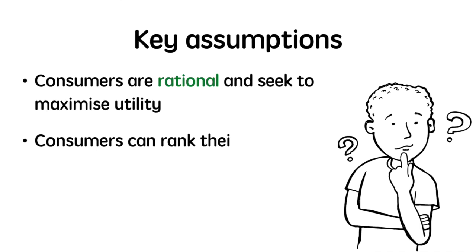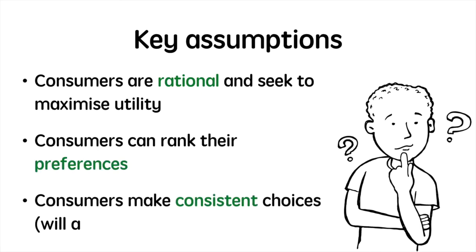They can rank their preferences. They can also make consistent choices, meaning if they choose product A to product B once, they will always do so.